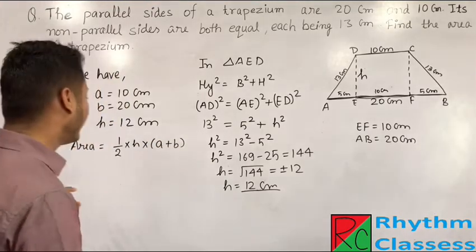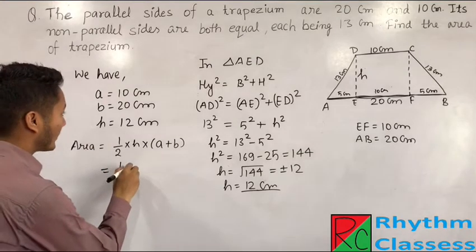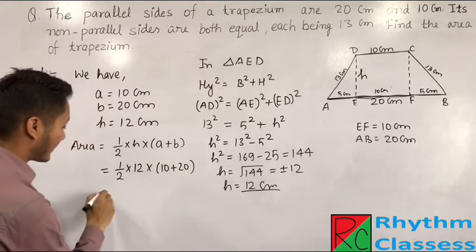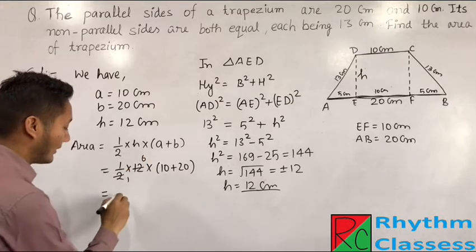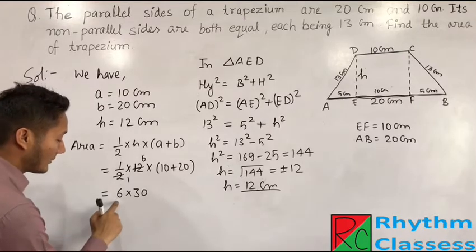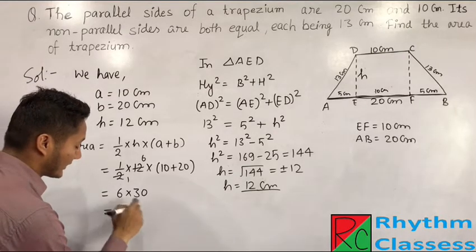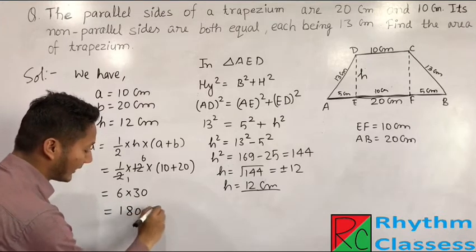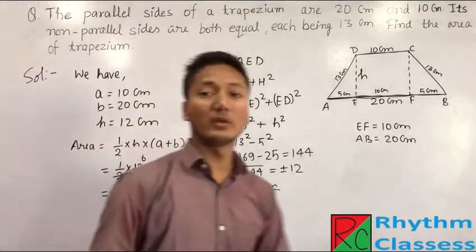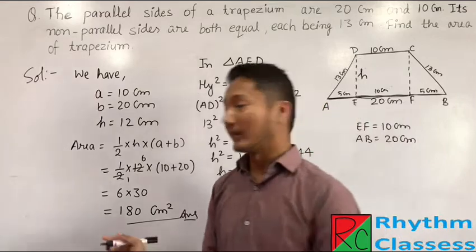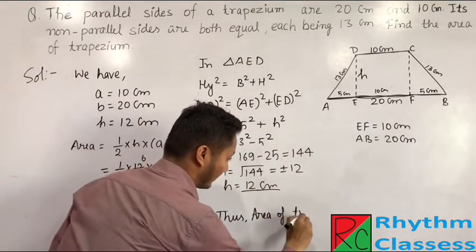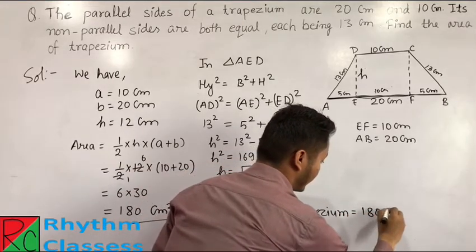Substituting the values: Area = ½ × 12 × (10 + 20) = 6 × 30 = 180 cm². This is our answer. Thus, the area of the trapezium equals 180 cm².